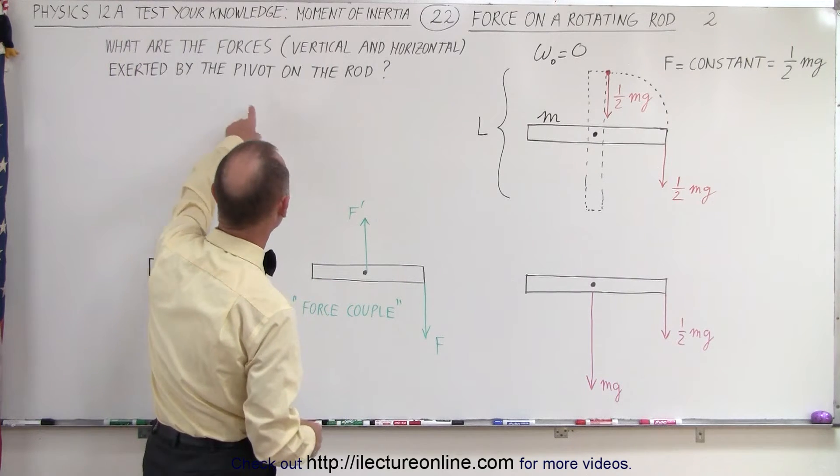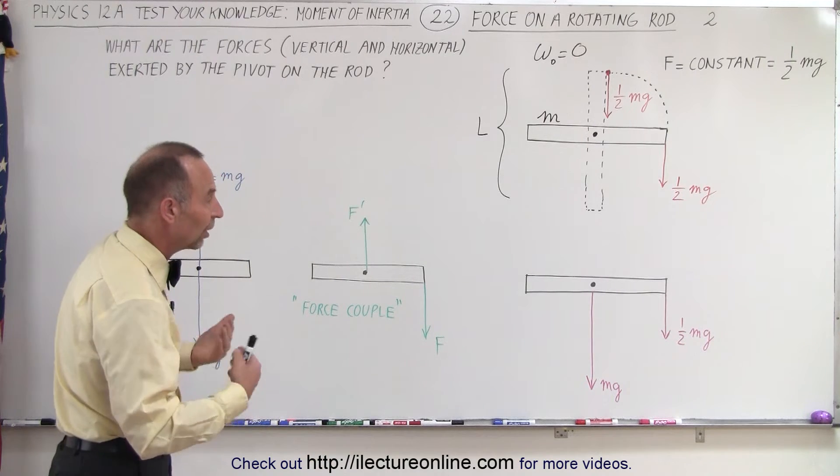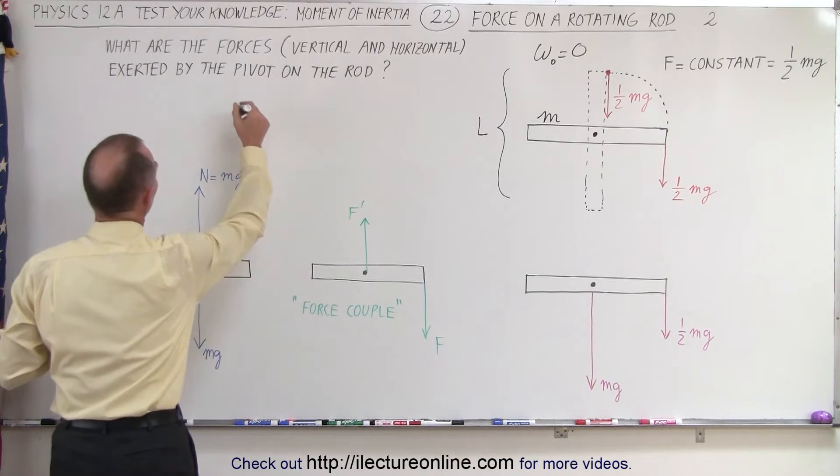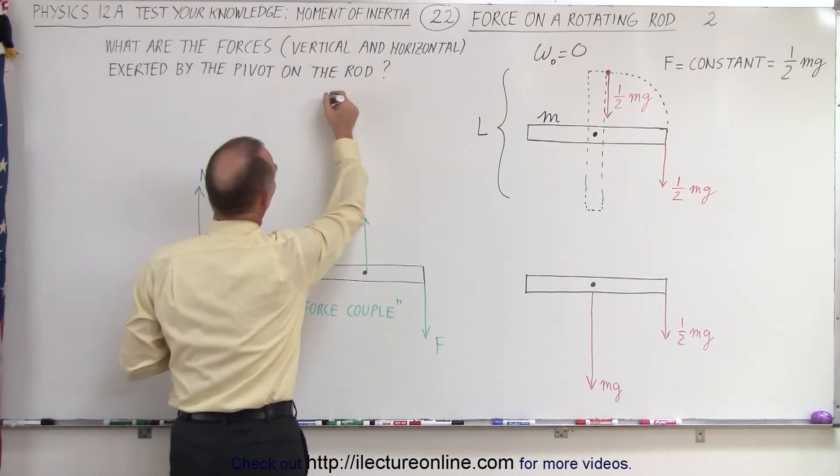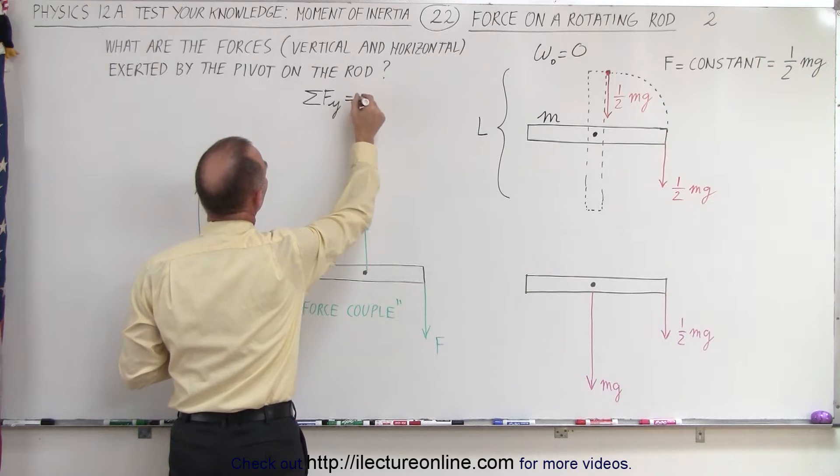So, since they want us to find both the vertical and the horizontal forces, let's set up the two equations that allow us to do so. So first, we'll go in the vertical direction. The sum, let's do it over here, the sum of all the forces in the y direction is equal to zero.